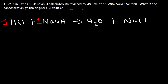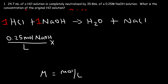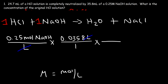Starting with the molarity of sodium hydroxide written as 0.25 moles of NaOH per liter of solution, we multiply by the volume. Converting 35.8 milliliters to liters gives 0.0358 liters, and the unit 'liters of solution' cancels. Now we have moles of NaOH. Using the one-to-one molar ratio from the balanced equation, for every mole of NaOH that reacts, one mole of HCl reacts with it.